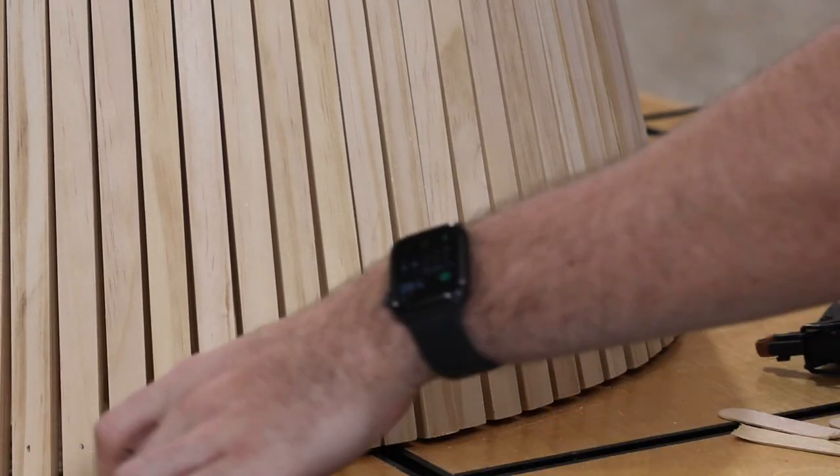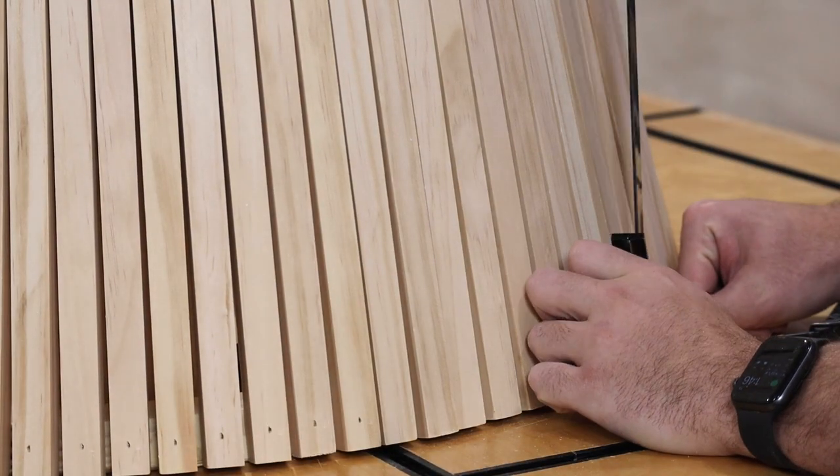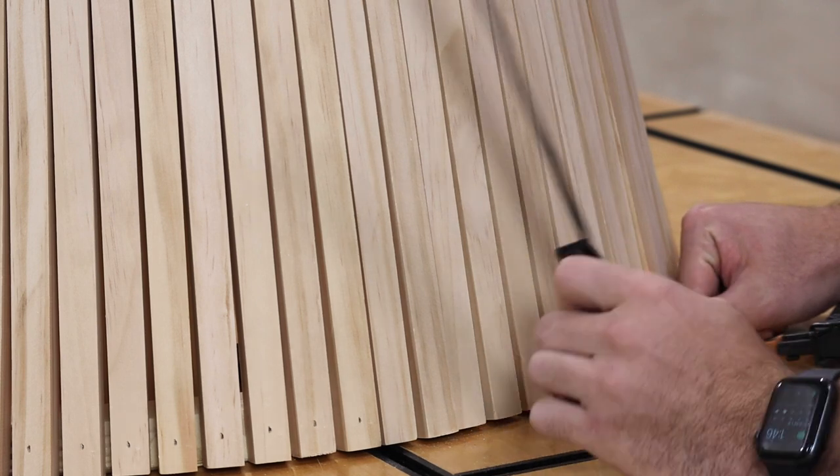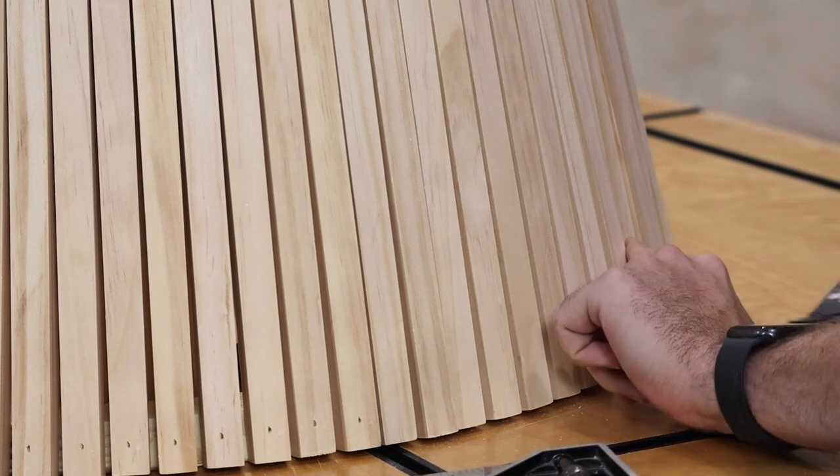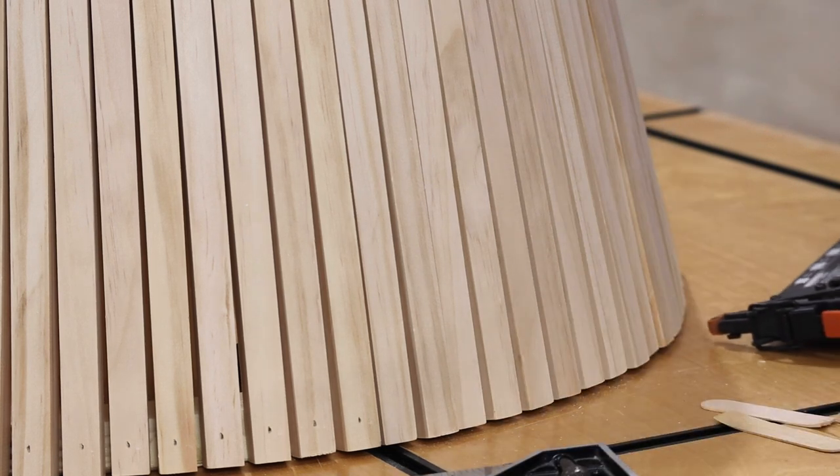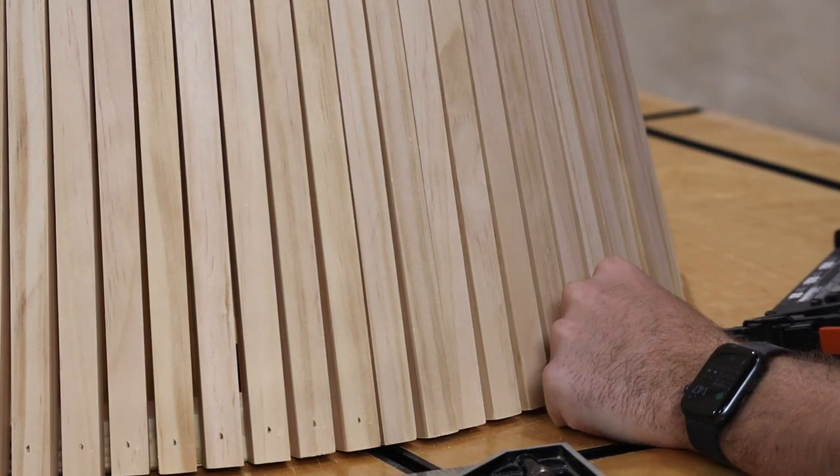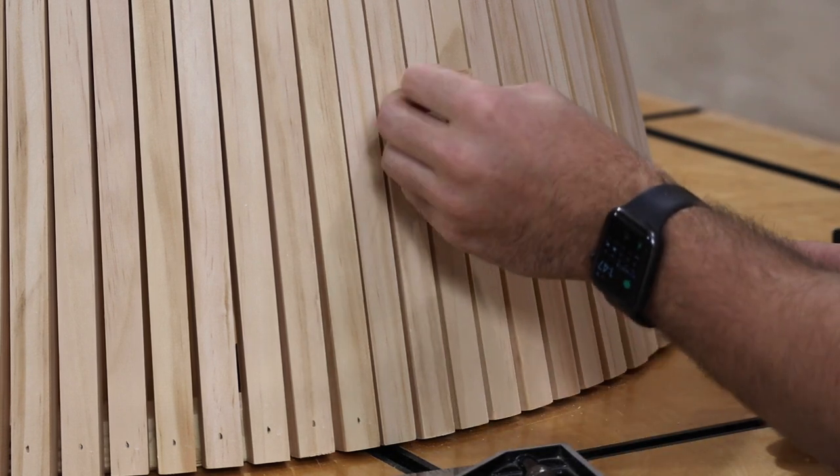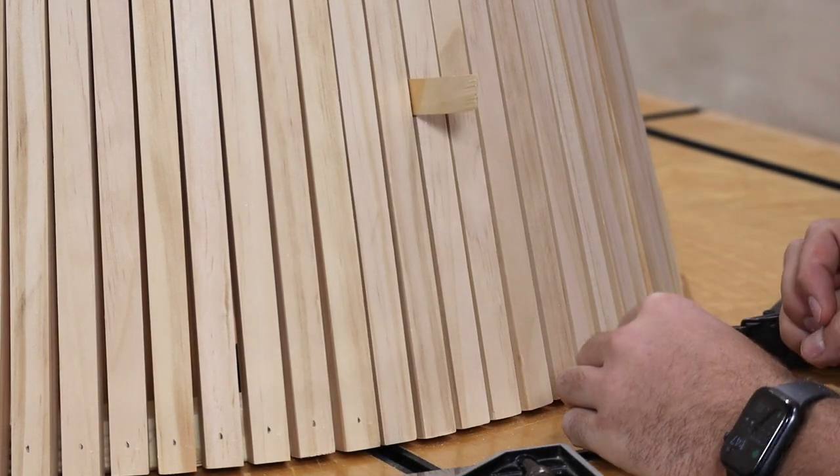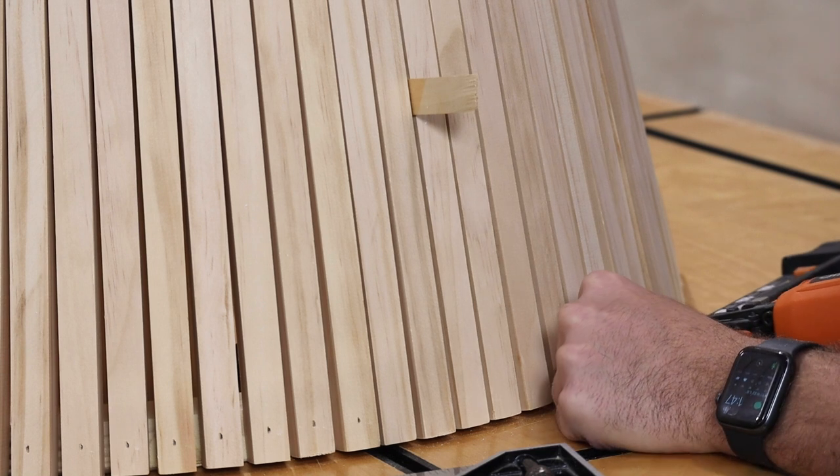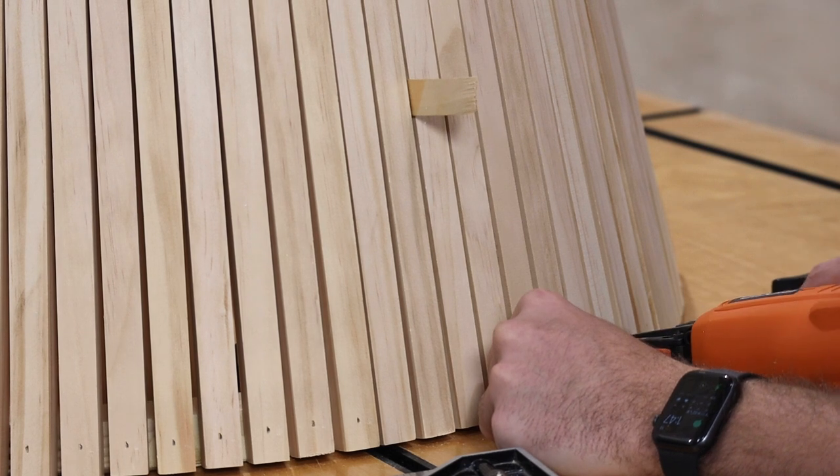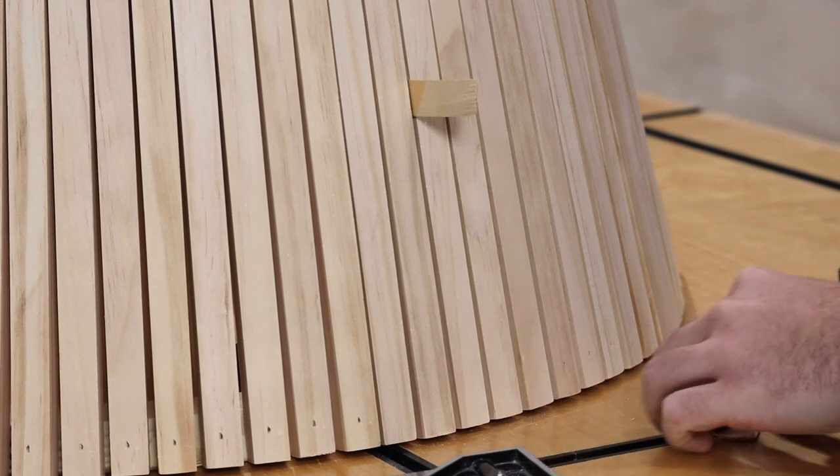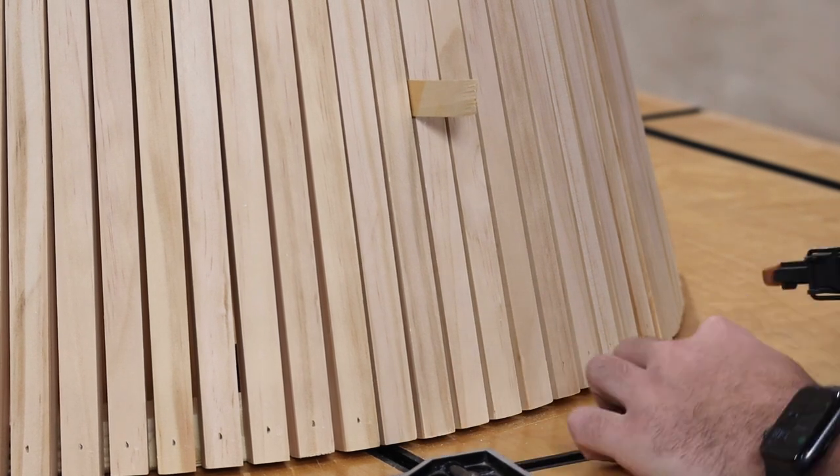With the top nailed in, I moved on to the bottom ring. I started with a single slat and used a square to ensure the slat was perpendicular to the two rings and then nailed it in place. Then, I moved 10 slats over and repeated the same process. With those two slats pinned in the correct position, I went through the 9 slats in between and equally spaced them. I used some popsicle sticks to help hold the spacing. Once they were all nailed in place, I moved on to the next 10th slat and repeated the same process all the way around.